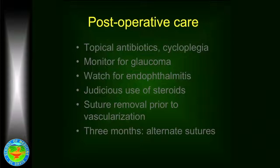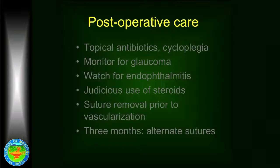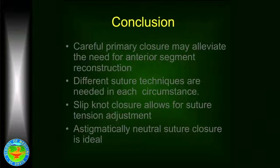Regarding suture removal: generally remove sutures prior to vascularization of the wound. For most strictly corneal incisions, sutures can be taken out by three months. A good technique is to remove alternate sutures — remove every other suture to see if the wound is stable. For example, with nine sutures, take out one, three, five, seven, and nine, then leave two, four, six, eight until the next visit. That keeps the wound stable, and then you can come back and take the remaining sutures out.